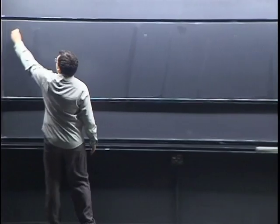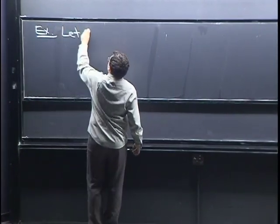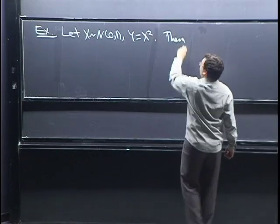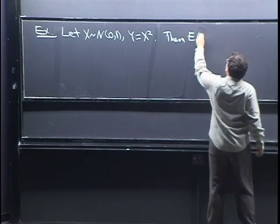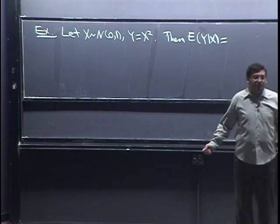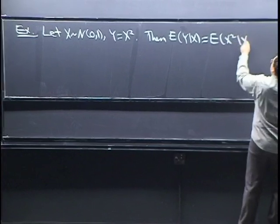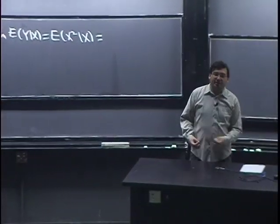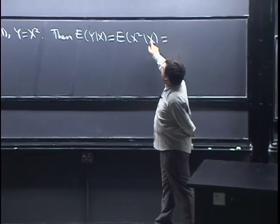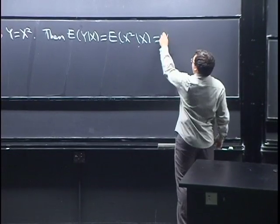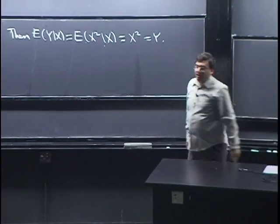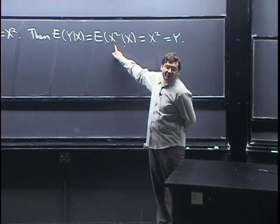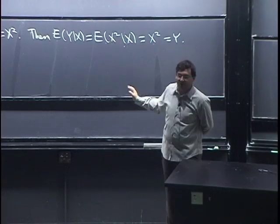Here's a simple example. Let X be standard normal and let Y equal X squared. Suppose we want E of Y given X. This notation means we get to treat X as known, and then we try to give our best prediction for X squared — best in the sense of minimizing mean squared error. If we know X, we know X squared, so obviously our best prediction would be X squared, which equals Y.